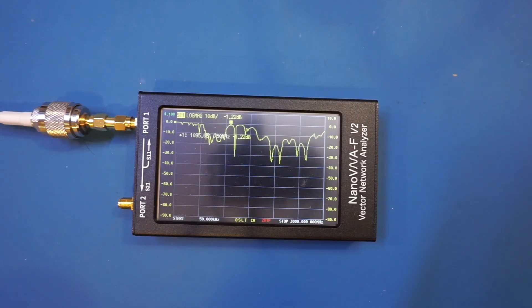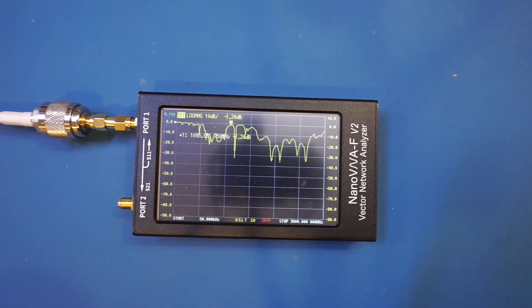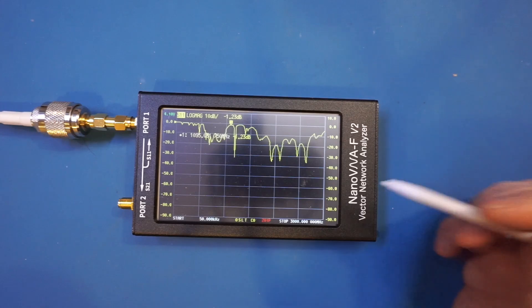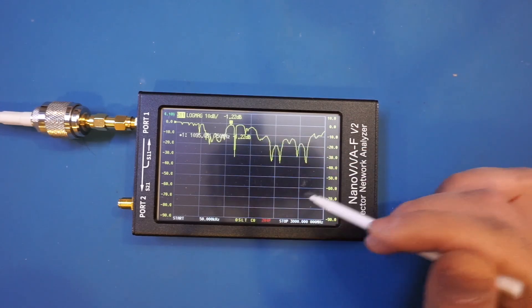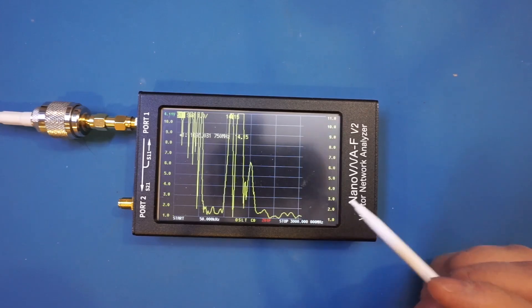And to remind you that we currently are set as measuring the S11 for the return loss and right now you can see the return loss of the antenna from 50 kHz all the way to 3 GHz. Now if we switch to the SWR view we should see the two bands more clearly here. So for that I'm going to switch to SWR and you can clearly see the two bands.